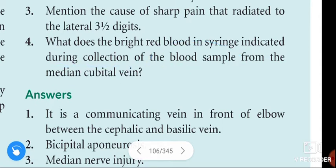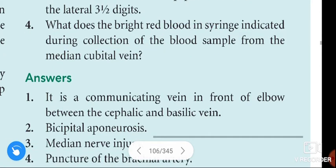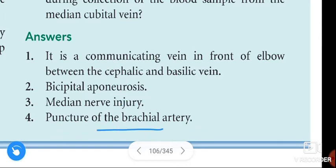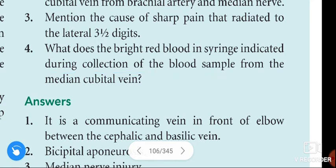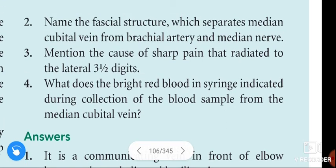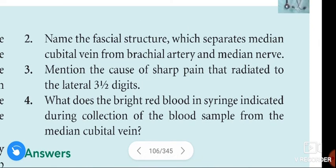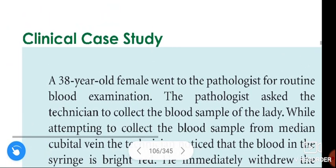The last question: what does the bright red blood in the syringe indicate during collection of the blood sample from the median cubital vein? That indicates puncture of the brachial artery. Bright red blood in the syringe during collection from the median cubital vein indicates brachial artery puncture. This concludes the clinical case study on faults done during blood collection. If you like my explanation, please like, share, and don't forget to subscribe. Thanks!